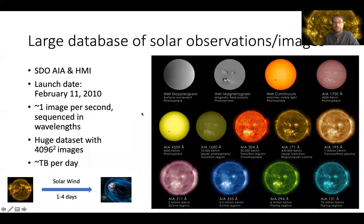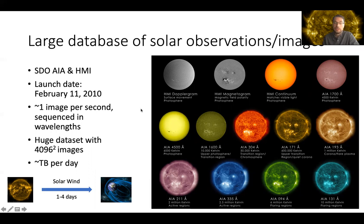The SDO mission has two main instruments, AIA and HMI, and also the EVE instrument. These two imaging instruments take about one image per second, sequenced in different wavelengths. On the right, you see all the different wavelengths that are covered. They can also trace different layers of the solar atmosphere, which is important to understand the overall dynamics.